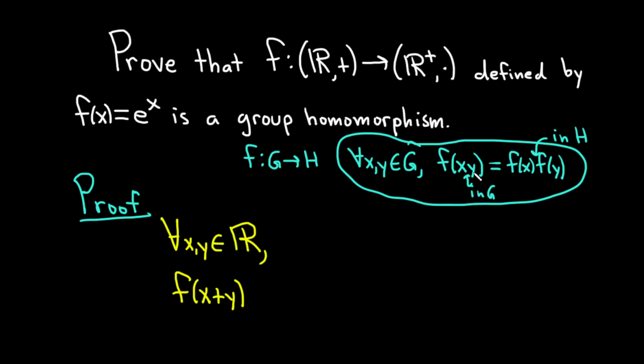If you want the additive version of this, it would be f of x plus y equal to f of x plus f of y. This is assuming that the operation in g is addition and the operation in h is also addition. So here, the operation is addition in R. So this is equal to, well, let's see, f of x is e to the x.